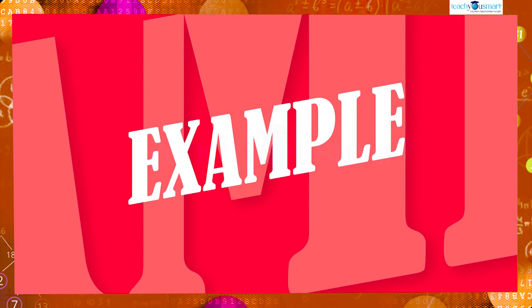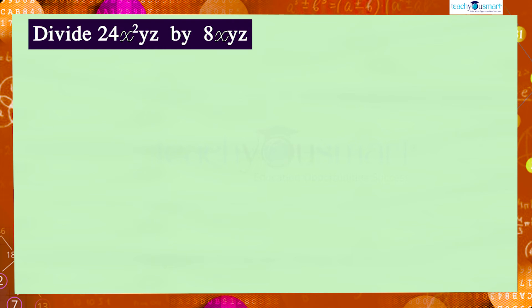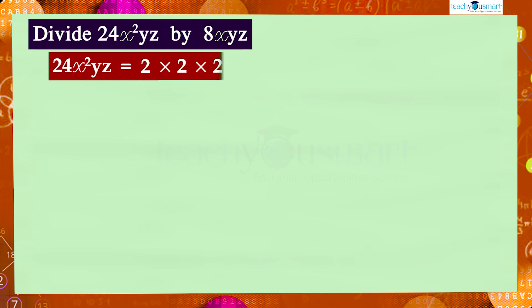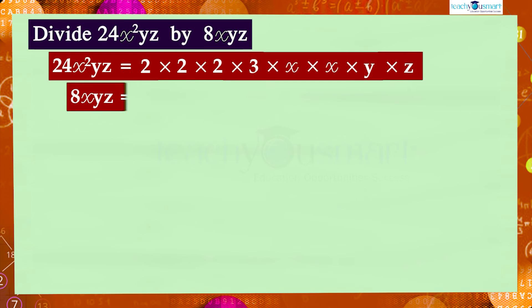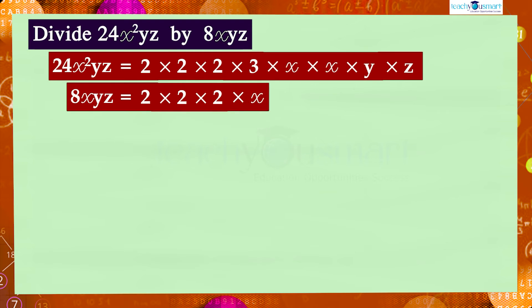Let's see another example: divide 24x²yz by 8xyz. We can write the given expressions in their irreducible factor form as: 24x²yz equals 2 × 2 × 2 × 3 × x × x × y × z, and 8xyz equals 2 × 2 × 2 × x × y × z.